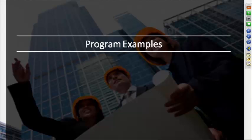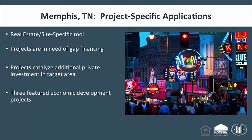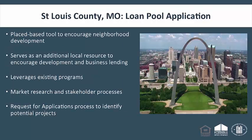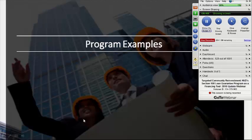We're going to talk about some program examples. We're going to look at two different examples: Memphis, Tennessee, which has been participating in the program since 1994 and mainly uses the program as gap financing for specific real estate development projects, and St. Louis County, Missouri, where Jeremy Newberg from Capital Access is working with the county as they set up their loan pool program. We're going to launch a video from Memphis first.